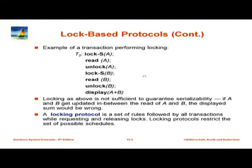The minimum requirement with locking is that before you read, you better get a lock, and before you write, you better get a lock of appropriate type. Before you read, get a shared lock on that data item. Here is a transaction which performs locking but can still get into trouble. It gets an S lock before reading, reads, then unlocks, then proceeds to S lock B, reads it and unlocks, and then displays total A plus B. It is doing locking — when you read a data item, you have an S lock on it. But it turns out this is not enough to guarantee serializability.